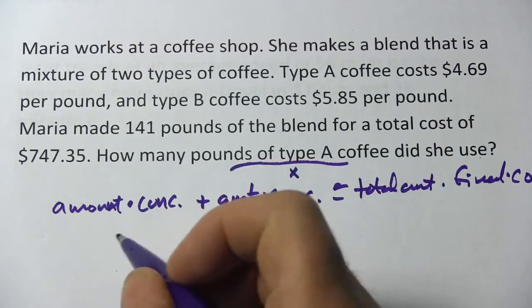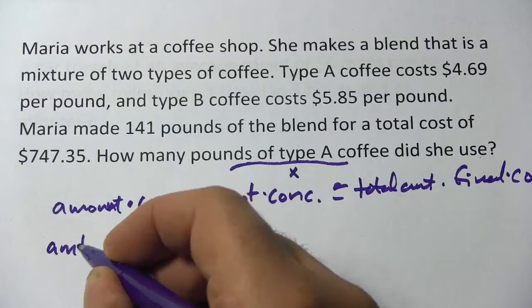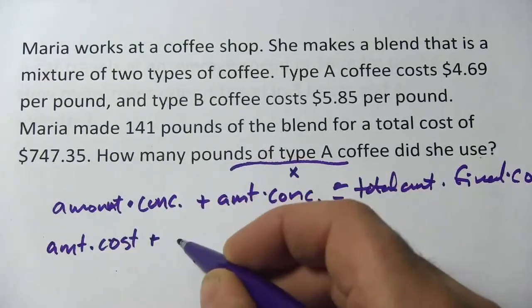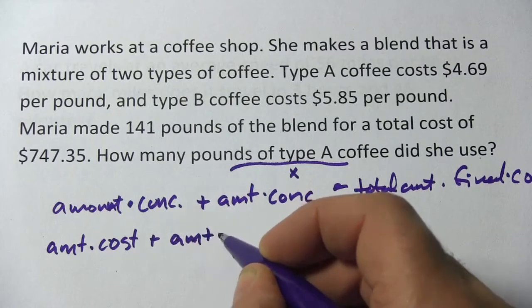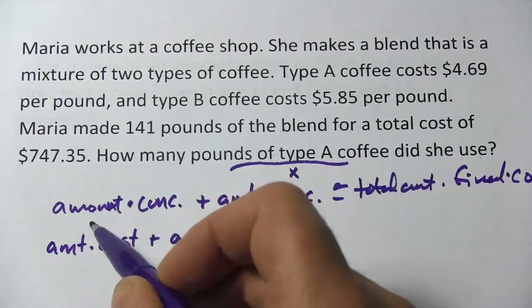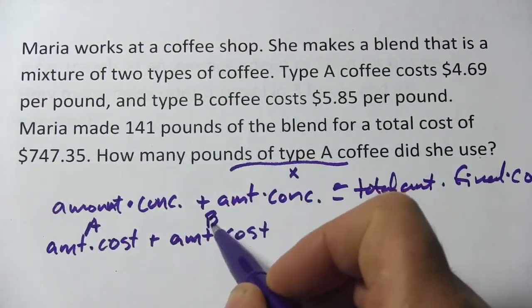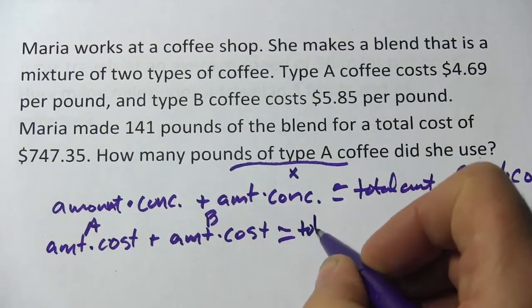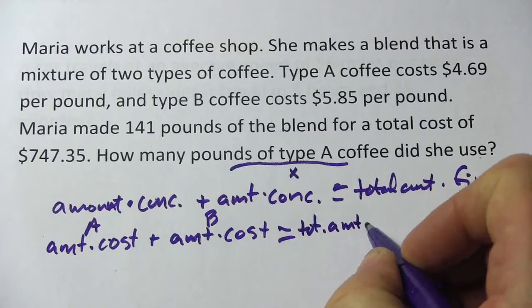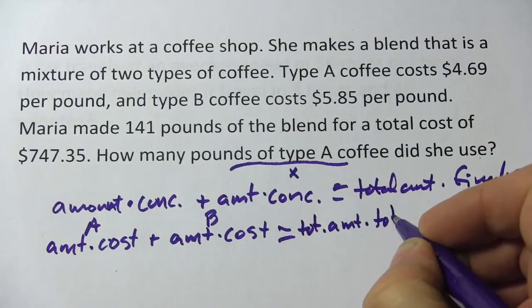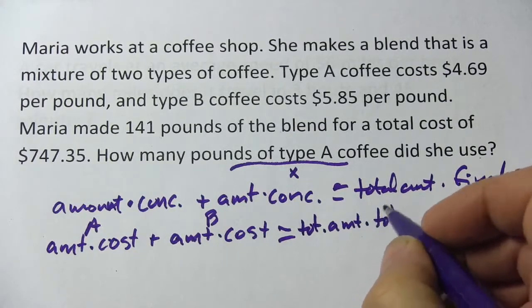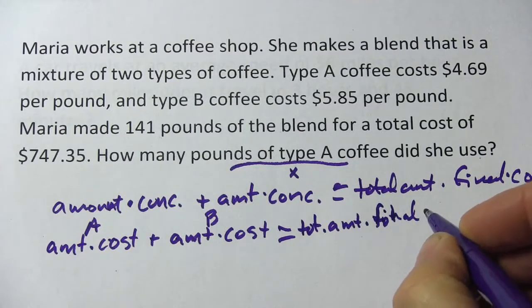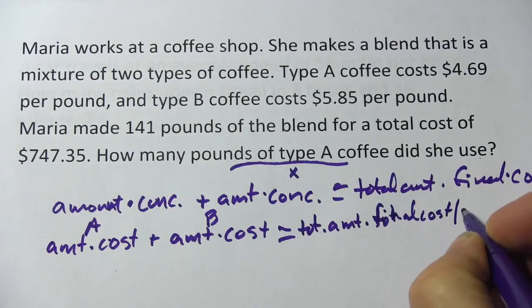Now we're going to use this formula here. We're going to have amount times, actually in this case cost, plus amount times cost. And this is for type A and this is for type B. Add those together and you're going to get the total amount times the total cost, sorry, times the final price per pound. Remember this cost is per pound.